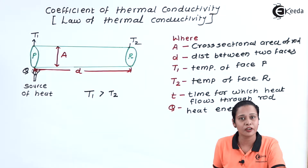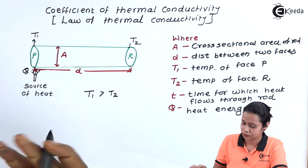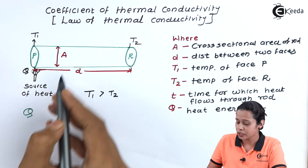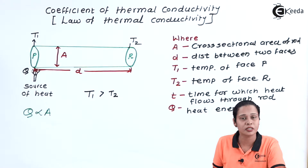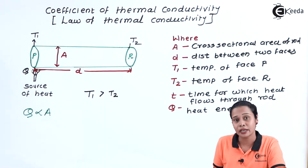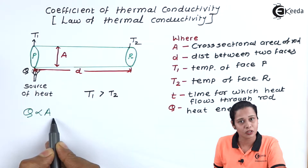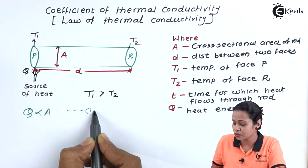We will see what are the factors affecting the transfer of heat. First, Q is directly proportional to the cross-sectional area A, because if the cross-sectional area is more, then more heat will transfer through the material. So it is directly proportional to the cross-sectional area. This is equation number 1.